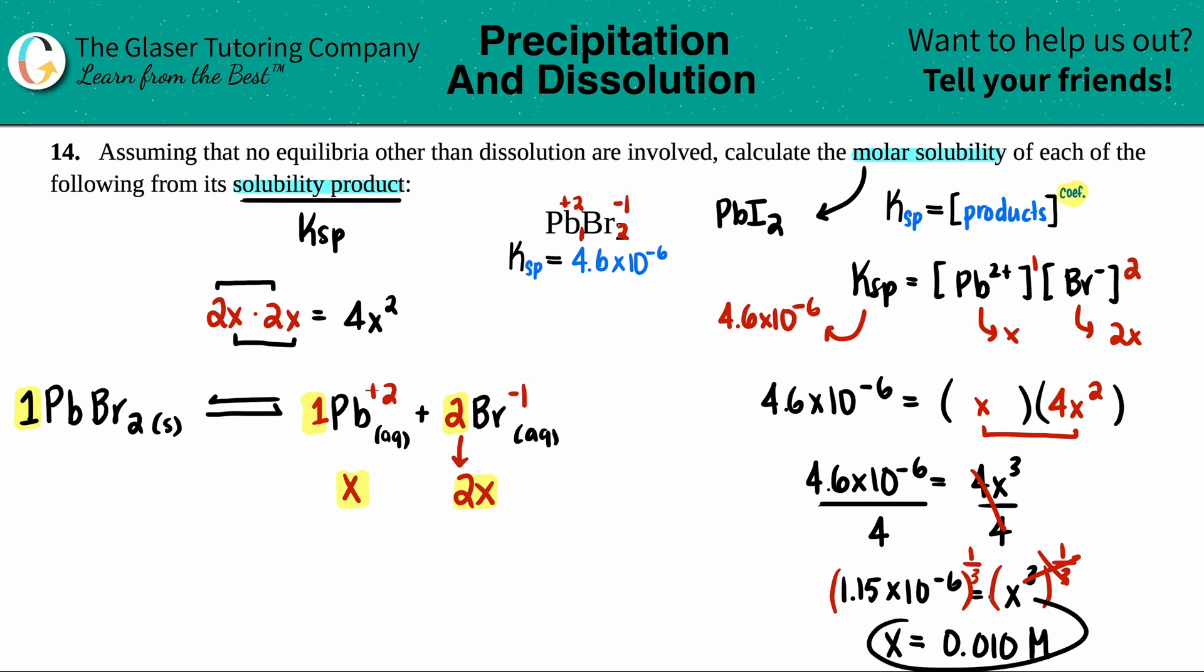So you could treat this as a 1X. It would be the same number. So this would be 0.010 molarity of PbBr2. Final answer for all you viewers out there.